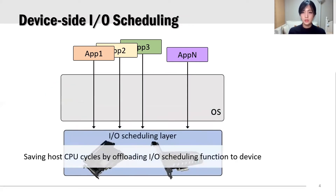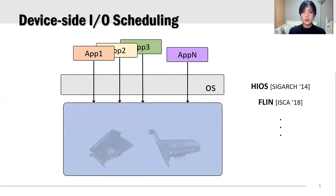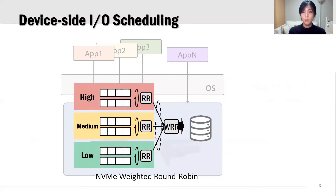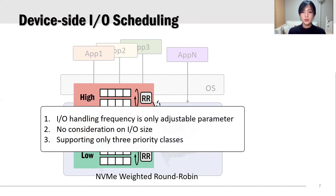Offloading the I/O scheduling function to a device is an attractive approach to saving CPU cycles. Many researchers have proposed to conduct I/O scheduling inside an SSD. The standard NVMe protocol has an I/O scheduling feature called NVMe Weighted Round Robin Queue Arbitration, or WRR. It provides three priority classes of I/O command queues, each with a configurable weight, and applies Weighted Round Robin I/O request scheduling by the SSD firmware. However, fair queueing cannot be easily implemented with NVMe WRR for the following reasons: first, I/O handling frequency is the only adjustable parameter; second, it does not consider the size of I/O requests; lastly, it supports only three priority classes whereas the number of tenants can be higher. Consequently, it is necessary to bridge the gap between the requirements of fair queueing and the simple yet uncertain performance characteristics of NVMe WRR.